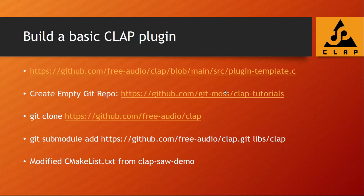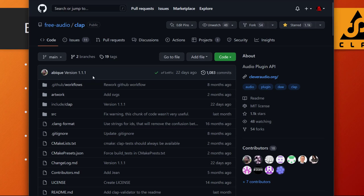I created an empty Git repo, added a reference to the CLAP library, and modified the CMakeLists file we used last time from the CLAP sort demo — removing libraries we don't need. You don't have to go the Git route; you can simply download the CLAP header files from the CLAP GitHub and add them statically to your project. I chose the Git submodule approach because it makes updating CLAP easy. In the CLAP GitHub under 'include/clap' you find all the required header files.